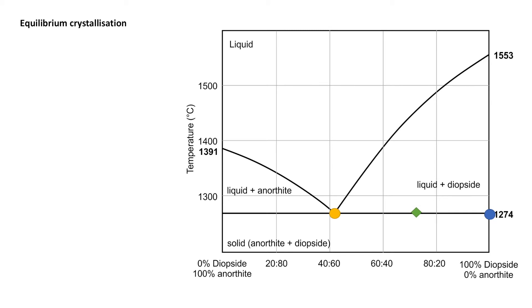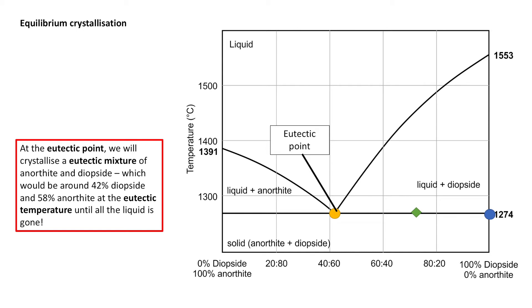So let's continue to evolve that system, and we're going to get here. So now our liquid has reached what's known as the eutectic point. In this phase diagram, at 1,274 degrees Celsius. At the eutectic point, we're going to crystallize a eutectic mixture of anorthite and diopside, which in this phase diagram would be around 42% diopside and 58% anorthite.